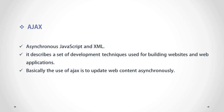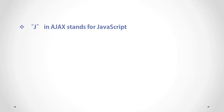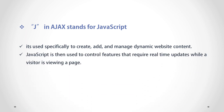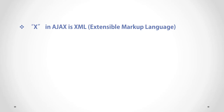The J in AJAX stands for JavaScript. It's used specifically to create, add, and manage dynamic website content. In other words, after markup languages like HTML and CSS are used to build and display static web features like headers, font, and paragraphs, JavaScript is then used to control features that require real-time updates while a visitor is viewing a page.